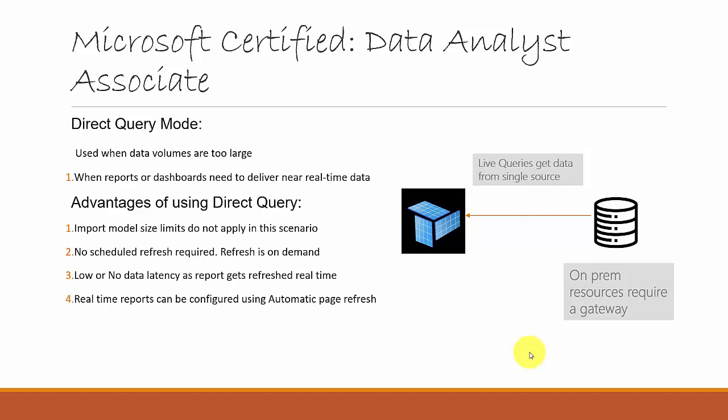Moving on to Direct Query mode — you can see it's querying data directly from a database, Excel file, or other source. On-premises resources require a gateway, and live queries get data from a single source. The advantages are that import model size limits do not apply since you're not importing data; no scheduled refresh is required because there's no cache; and there is low or no data latency as you're querying in real time.